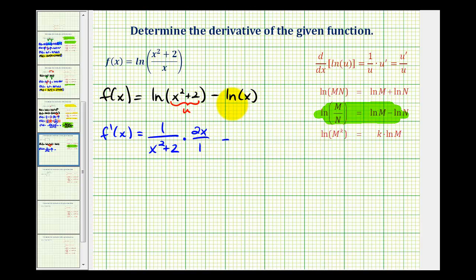And then minus the derivative of natural log x, which would be one over x. So we'd have f prime of x equals two x divided by x squared plus two minus one over x.